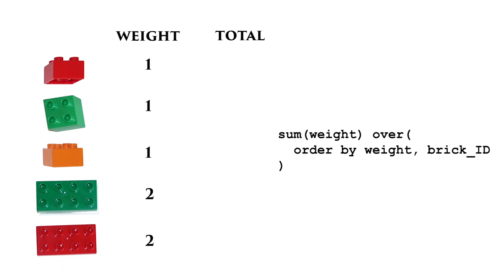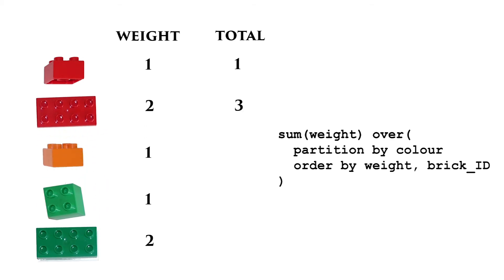So we've got the running total across all toys, but you can also calculate this by colour. Just add the colour column to the PARTITION BY and you get separate windows for each hue. As well as COUNT and SUM, you can add the OVER clause to all your favourite aggregate functions, and then partition and order as needed.